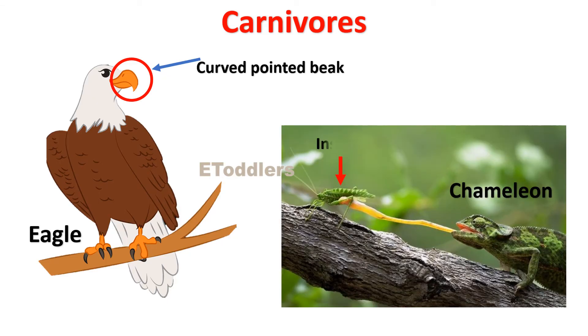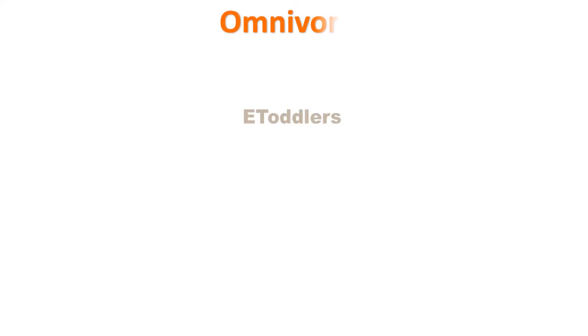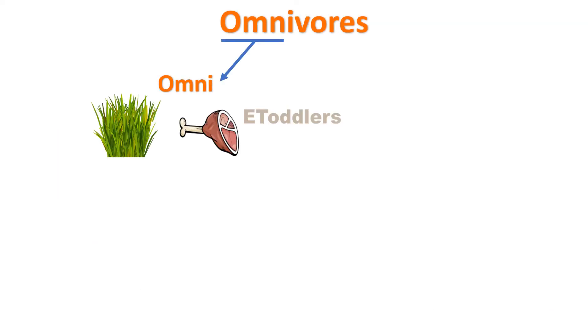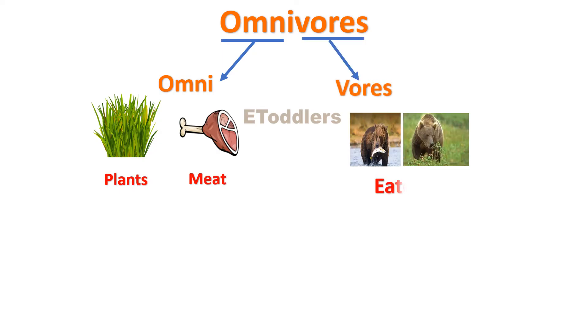Some animals such as the chameleon catch insects with a long tongue. Omnivores — 'omni' means plants and meat, 'vores' means eaters.